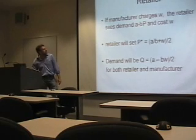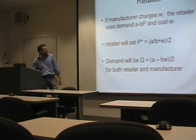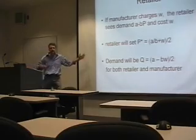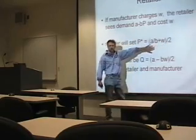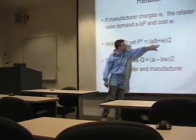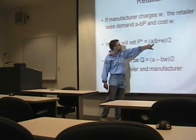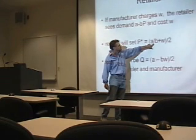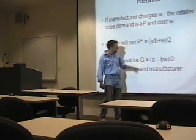Now we add in the complication of a retailer. Suppose that instead of selling directly, you're going to sell to a retailer at a price of W — your wholesale price. What's the retailer going to do? He has exactly the same problem you had before, only now instead of a cost C, he has your wholesale price W. So we can just substitute W for C and get the same results. He's going to set a price P which is the average of A/B — the price at which he sells zero — and your wholesale price, which is his cost. That maximizes his profits.